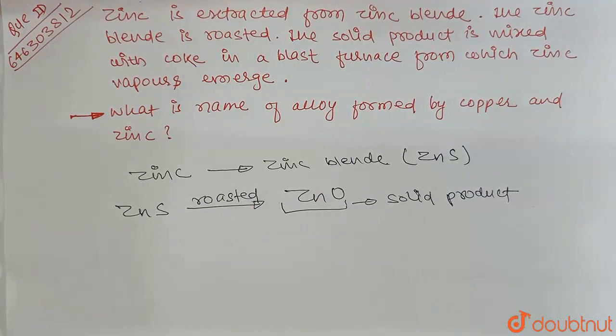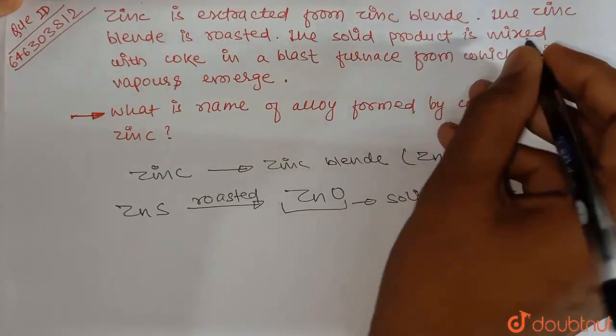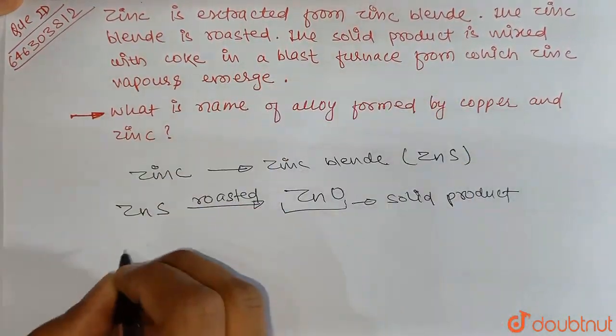Roasting is basically a process in which we convert sulfide to oxide in presence of oxygen at high temperature. Now the solid product is mixed with coke in blast furnace from which zinc vapor emerges.